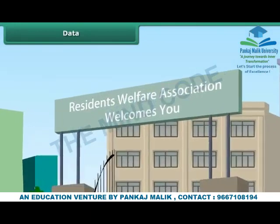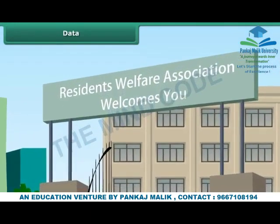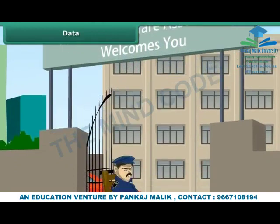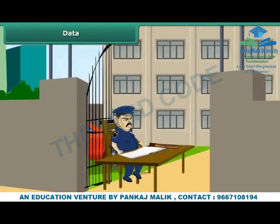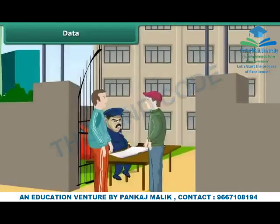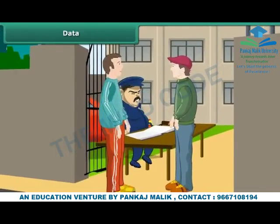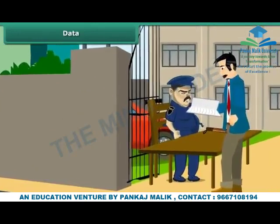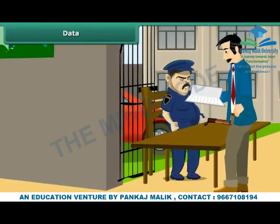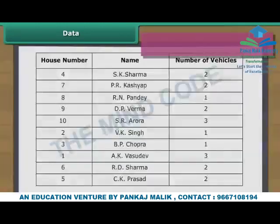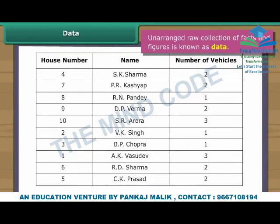The Residents Welfare Association, or RWA, of a certain locality has decided to charge residents for parking more than one vehicle inside the residential complex. For this purpose, it has asked residents to provide details of their vehicles to the security guard at the entrance gate. A week later, the president looks at the register. Such unarranged raw collection of facts and figures is known as data.